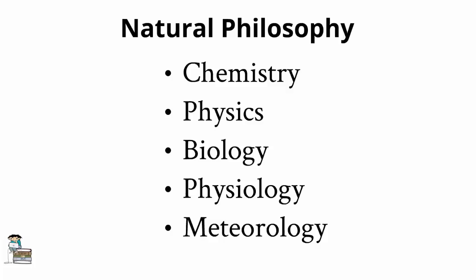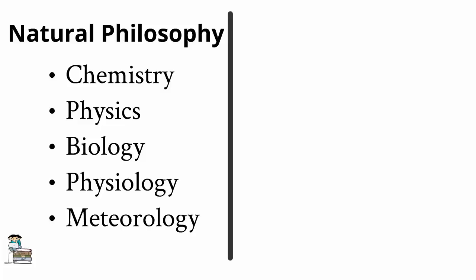Natural philosophy included, among others, the disciplines we call chemistry, physics, biology, physiology and meteorology. However, interestingly, ancient and medieval scholars saw the disciplines of mathematics and medicine as being outside the domain of natural philosophy. It was not until the Scientific Revolution that mathematics was seen as a proper and in many cases integral tool for describing nature.